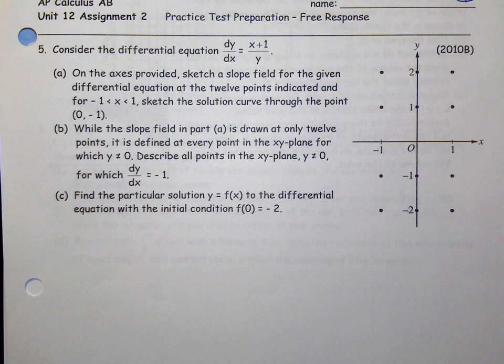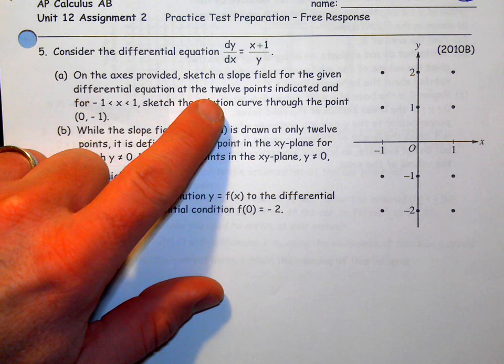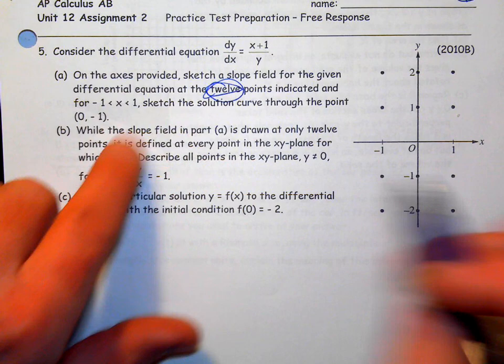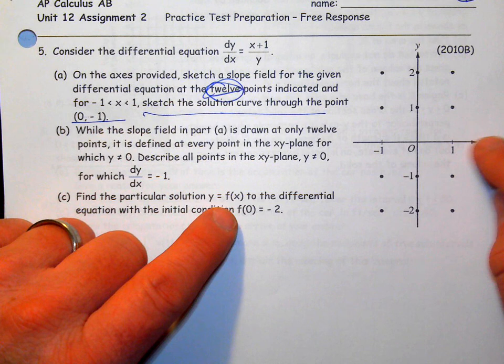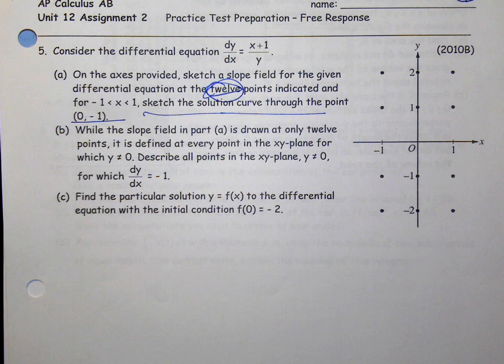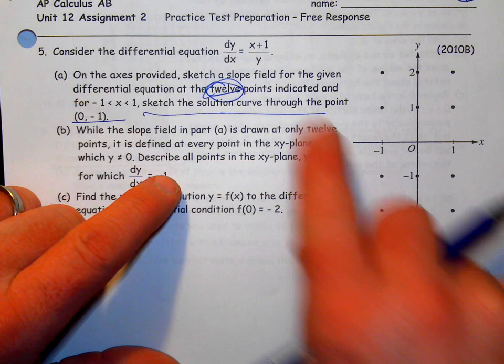On part (a), sketch the slope field with the given differential equation at 12 indicated points from negative one to one, and sketch the solution curve through the point (0, -1) — that's a particular solution. There are 12 points: one through twelve. There are none on the x-axis, and there's a good reason for that — they're actually trying to help you by not putting dots there.